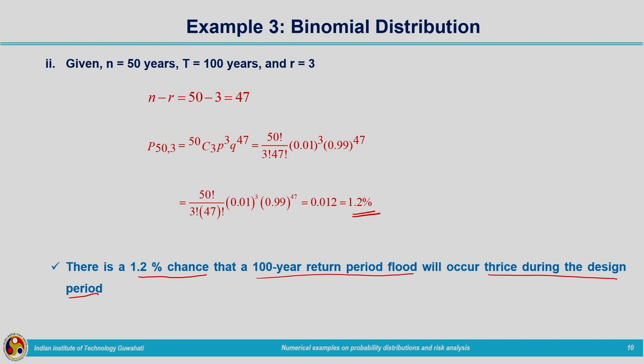Similar to binomial distribution, we can solve problems using other distributions such as Poisson distribution and gamma distribution. Now let us move on to the extreme value distribution, that is Gumbel's distribution, which is Extreme Value Type 1.